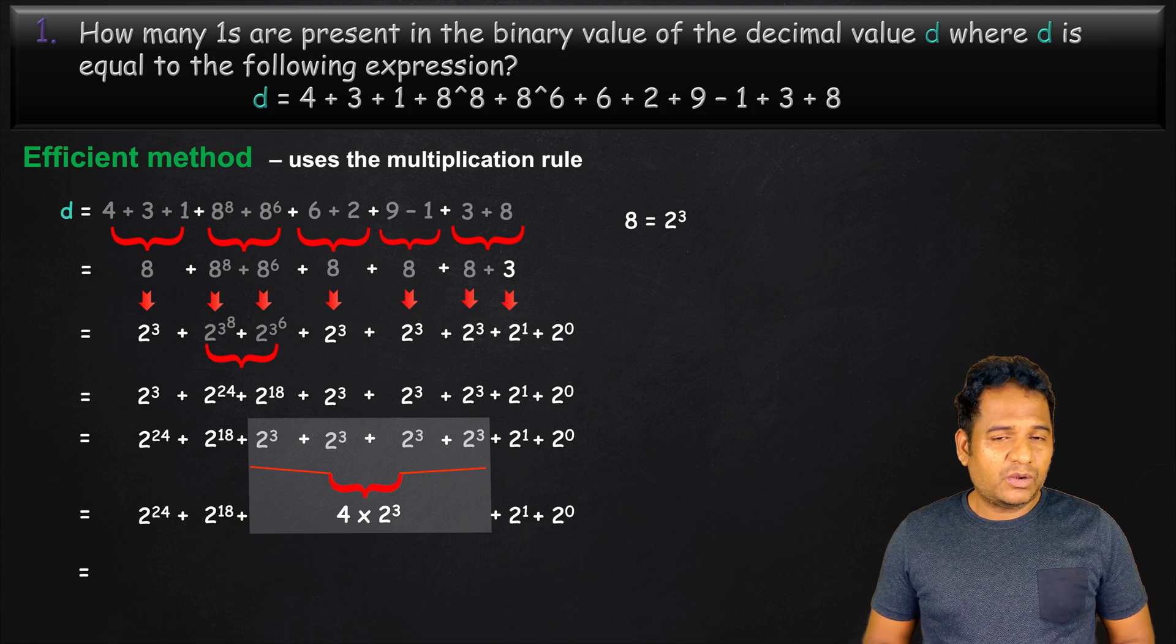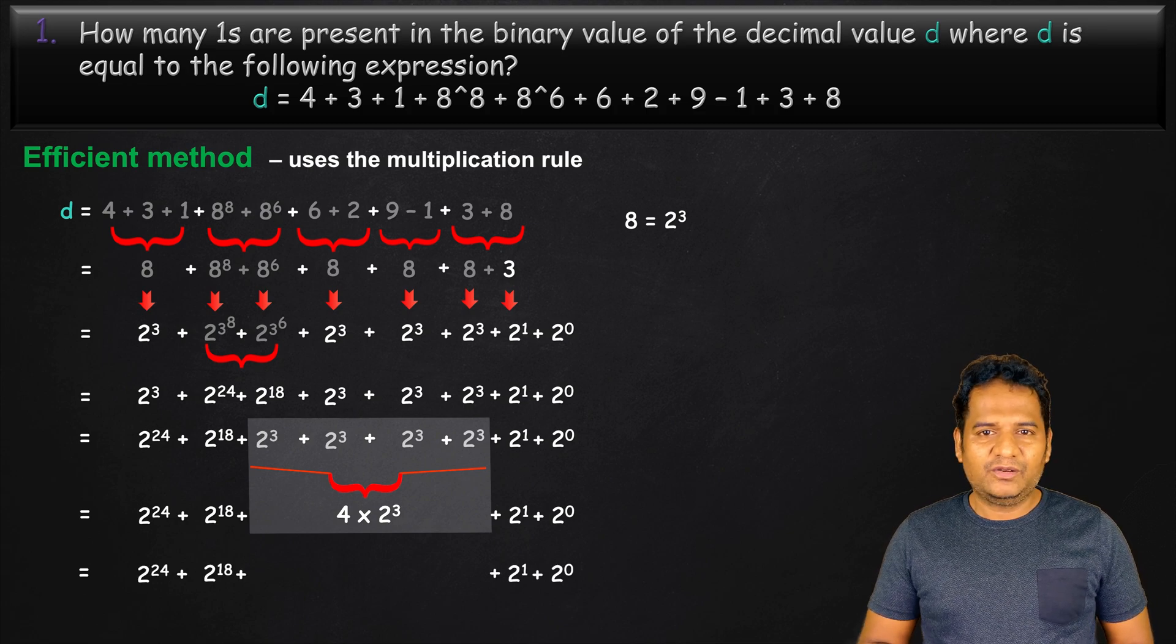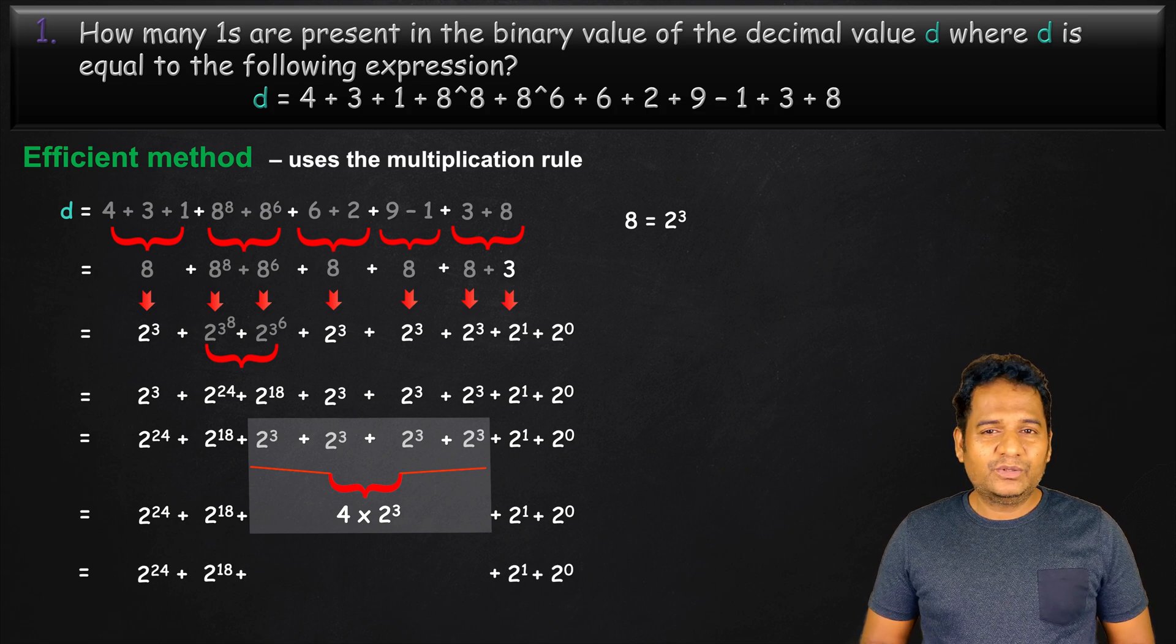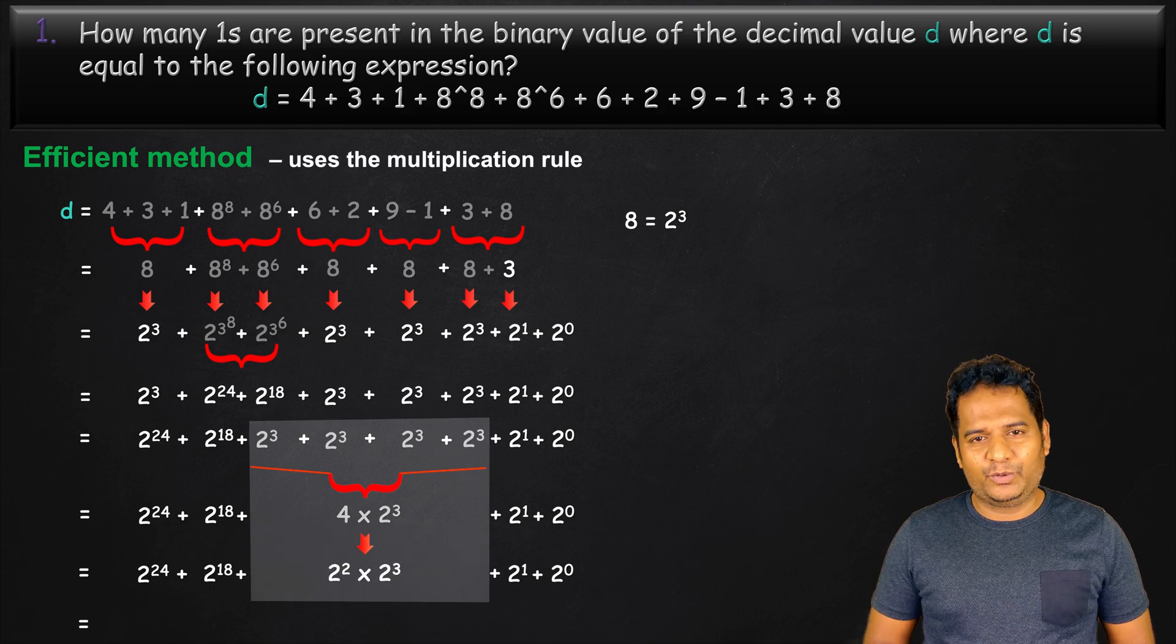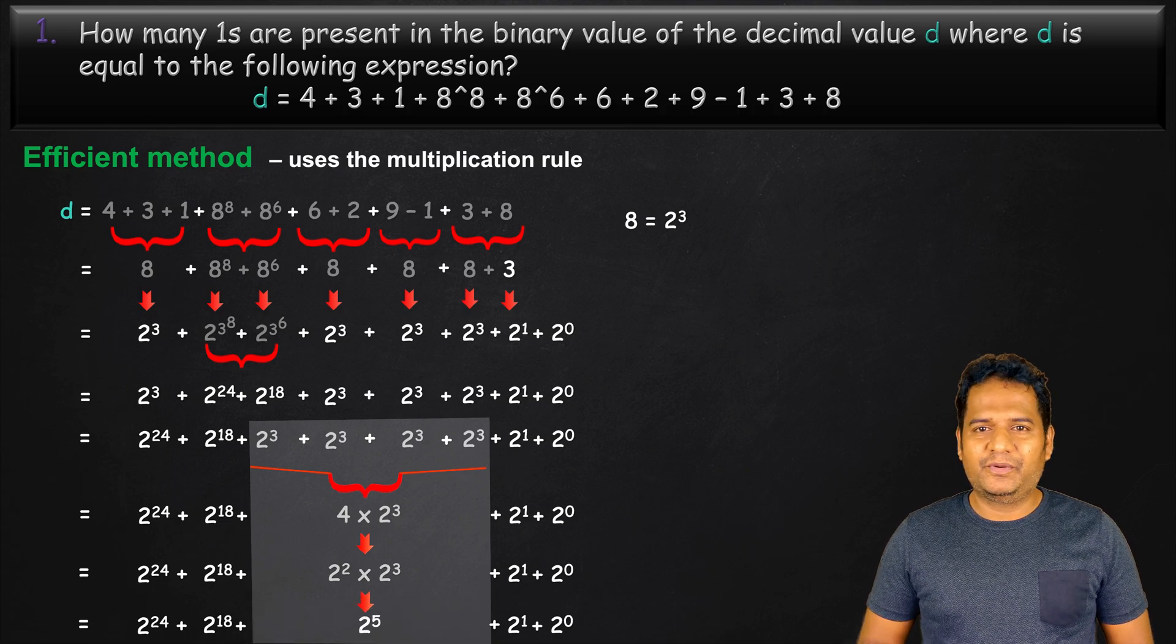Note that we want all coefficient of power of 2 as 1. Hence, we need to do something for the 4. We know that 4 is nothing but 2 power 2. And finally, we would get 2 power 5 for 4 times 2 power 3.